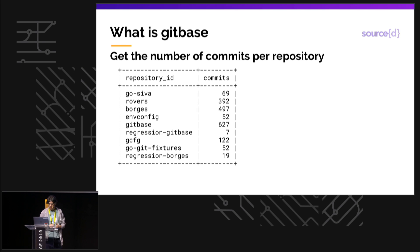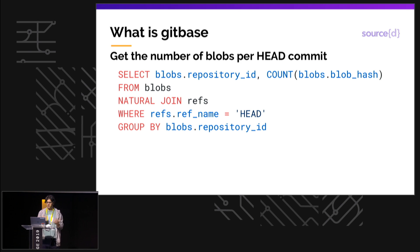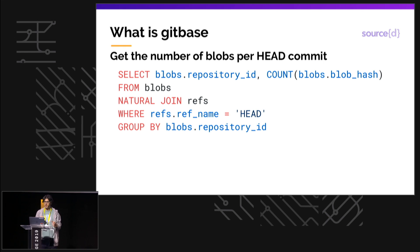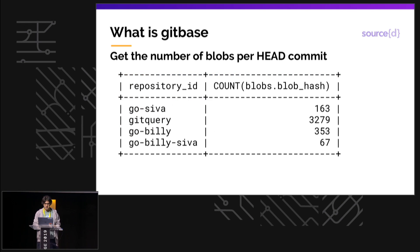And this is what you get in the MySQL client. This is another query to get the number of blobs in the head commit. Here we are using other features like JOIN and filtering with WHERE to get only the reference HEAD from all the repositories that it's pointing to. And this is the result.